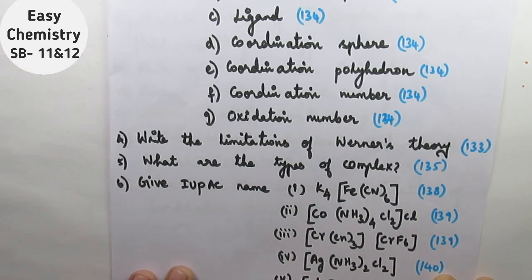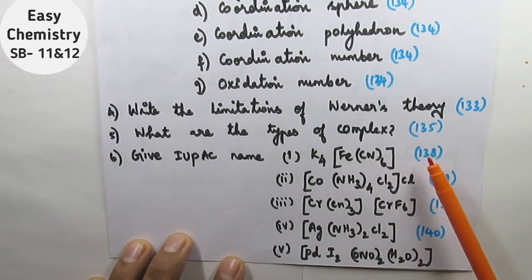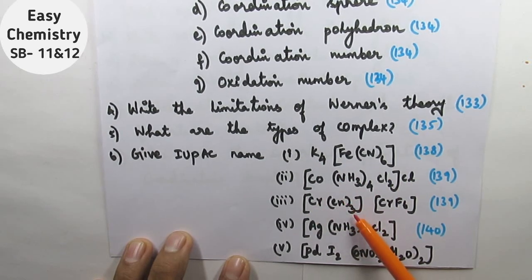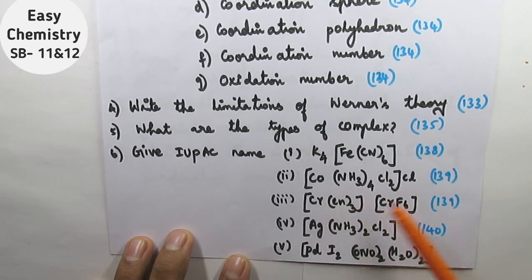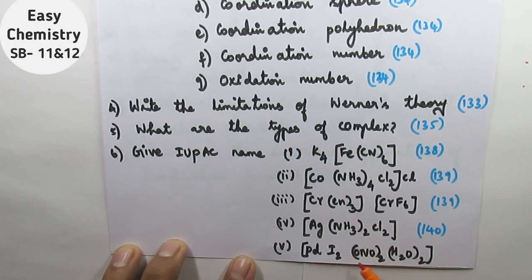You will see these examples. First example: K4[Fe(CN)6], page number 138. We will see this in the textbook. That's [Co(NH3)4]Cl2·Cl. [Cr(en)3] — this is one complex. That's another complex. It's a bimetallic complex. That's [Ag(NH3)2]Cl2. Pd(I2)(ONO)2(H2O)2. ONO is a bidentate ligand.